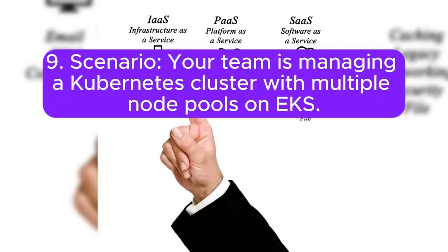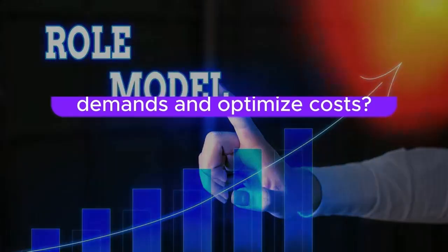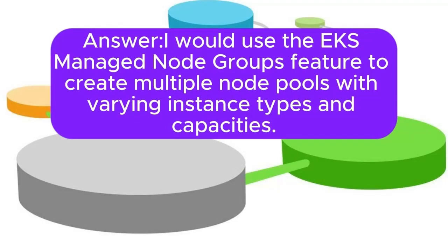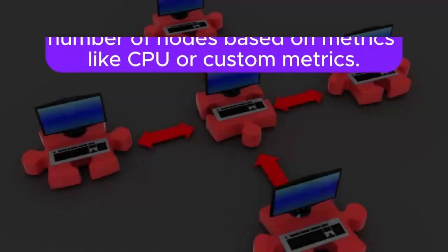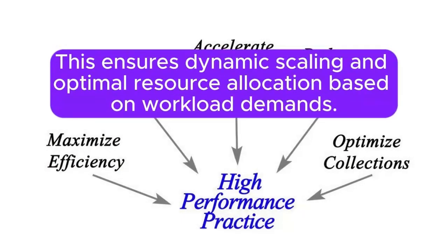Scenario 9: Your team is managing a Kubernetes cluster with multiple node pools on EKS. How would you dynamically scale node pools based on workload demands and optimize costs? Answer: I will use the EKS managed node groups feature to create multiple node pools with varying instance types and capacities. Auto-scaling groups can be configured to adjust the desired number of nodes based on metrics like CPU or custom metrics. This ensures dynamic scaling and optimal resource allocation based on workload demands.